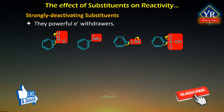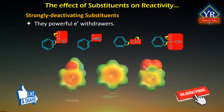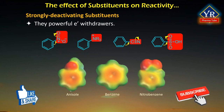Compare the electrostatic potential maps for anisole, benzene, and nitrobenzene. Notice that an electron-donating substituent — the methoxy group — makes the ring more red, more negative, and more nucleophilic. Whereas the electron-withdrawing substituent — the nitro group — makes the ring less red, less negative, and less nucleophilic.